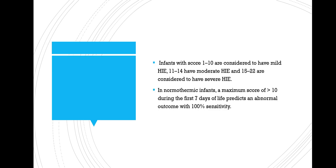Infants that score 1 to 10 are considered to have mild HIE, those scoring 11 to 14 have moderate HIE, and 15 to 22 is considered severe HIE. In normothermic infants, a maximum score above 10 during the first seven days of life predicts an abnormal outcome with 100% sensitivity. That's all about the HIE score — if you like the video please like, subscribe, and comment. Thank you.